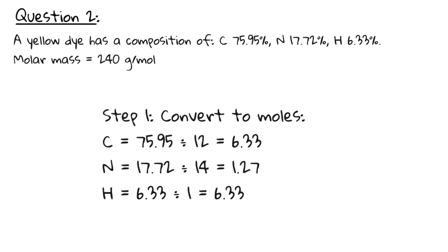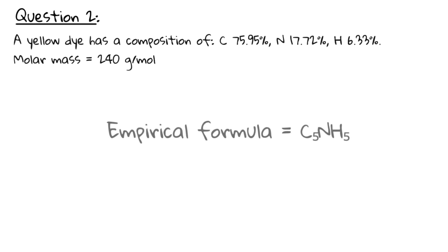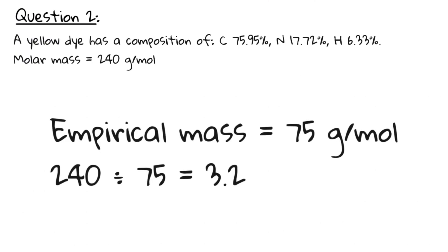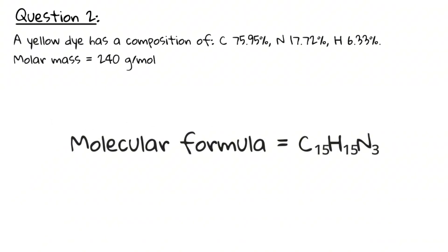As before, we assume 100 g and convert to moles. Then we divide by the smallest value. This gives us the empirical formula of C5NH5. Next, we calculate the empirical mass and divide. As we get 3.2, we round it to the next whole number, which is 3. Finally, we multiply by 3 to get C15N3H15.